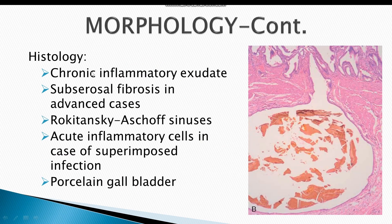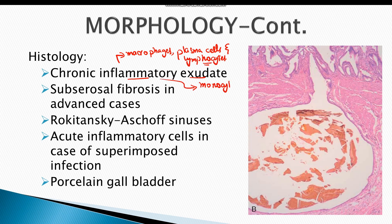The histological picture reveals chronic inflammatory exudate. In mild cases, this is composed of macrophages, plasma cells, and lymphocytes. In more severe cases, monocytes are also present; these monocytes contribute to fibrosis, which is typically subserosal and present in advanced cases. One particular histological feature of chronic cholecystitis is Rokitansky-Aschoff sinuses.